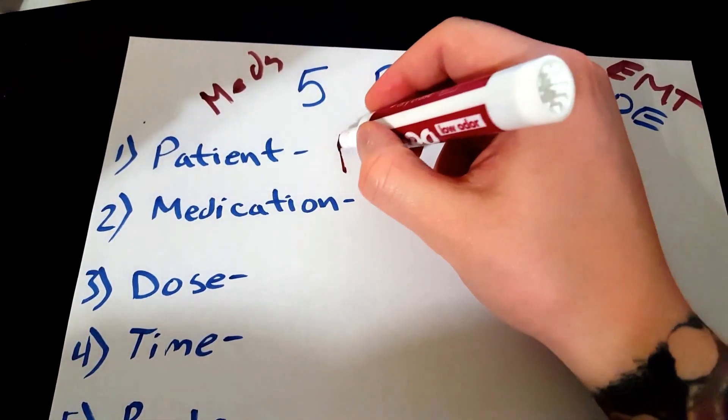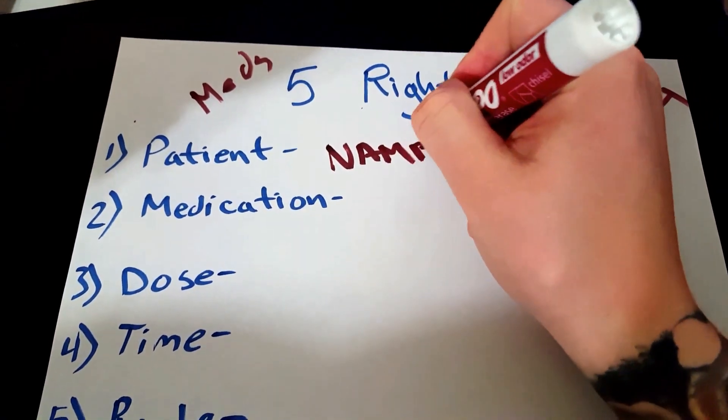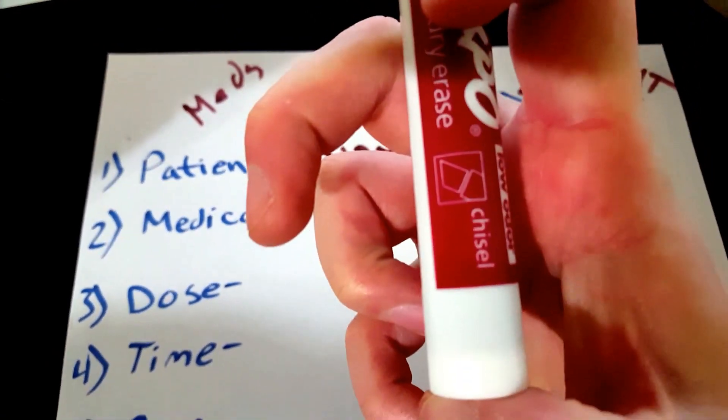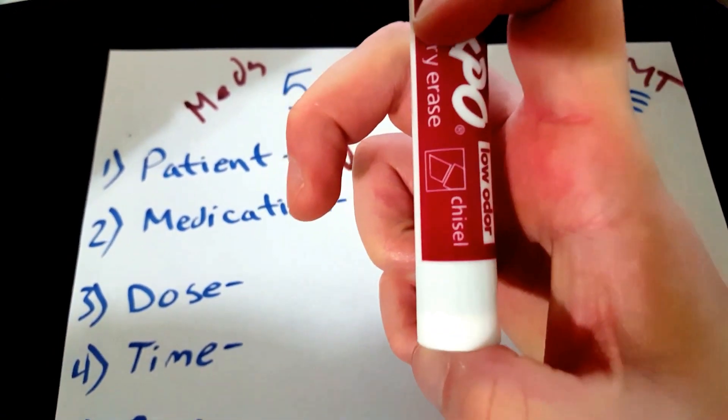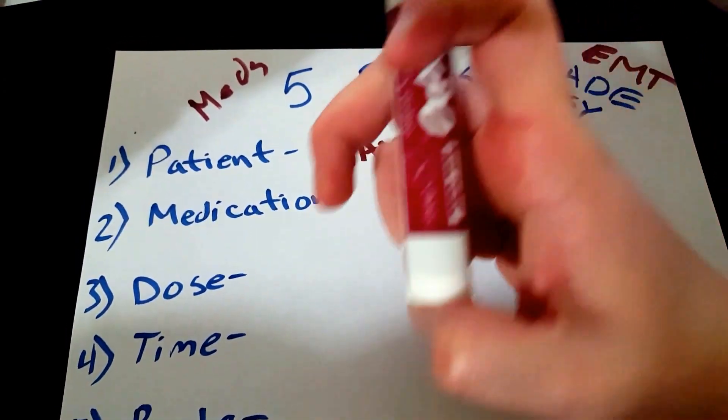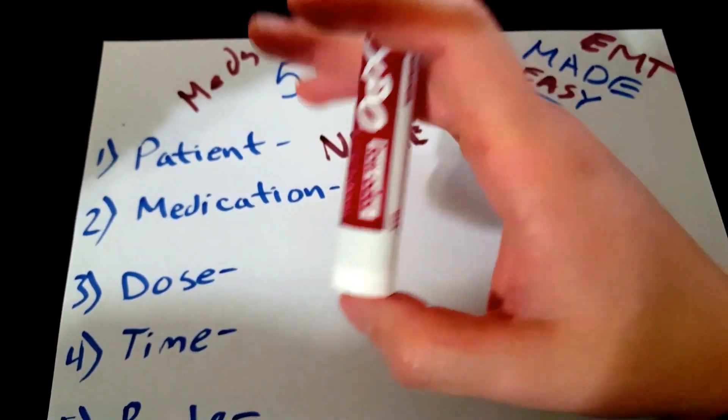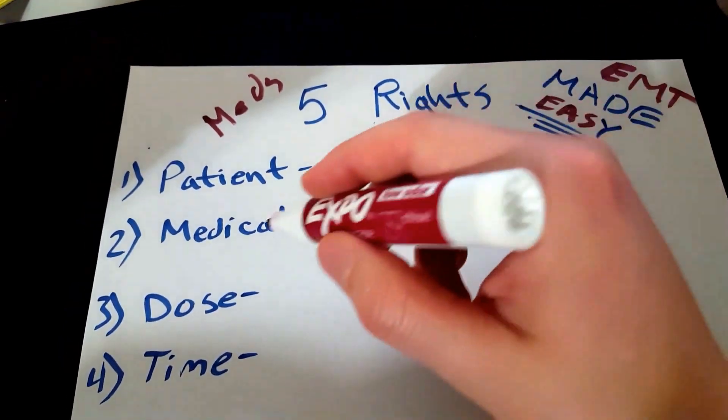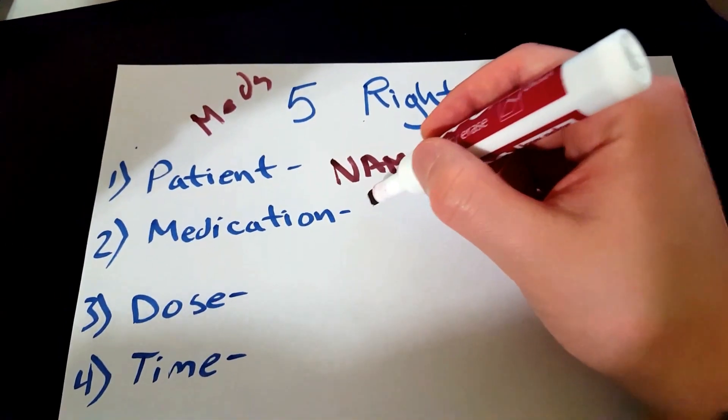First off, the patient name. Is the medication for your patient? You want to make sure and get the medication, look at the label. Is this the right medication for the patient? Is there a name on the medication? If it's not, you can't give it to them. Simple as that.